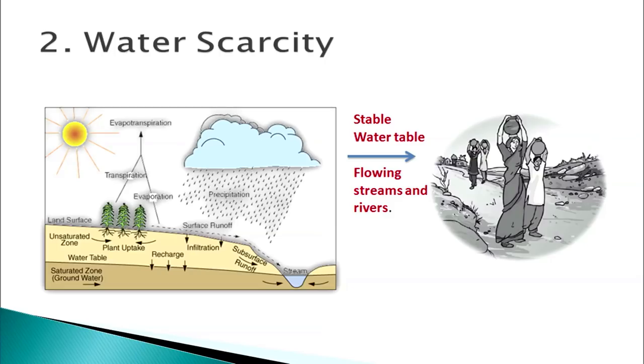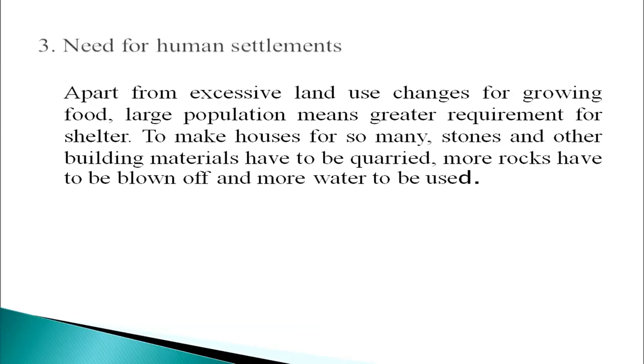Next is water scarcity. Water received as rainfall flows into rivers, lakes and other water bodies. Some of it seeps into the underground and reaches the groundwater. At certain depths of the soil, all the pore spaces between soil particles are saturated with water — this depth is called the water table. The water table may remain stable if the water drawn from the groundwater is replenished by seepage of rainwater. But if water withdrawal exceeds the rate of replenishment, the groundwater table keeps on receding, resulting in drying out of wells. In many areas, excessive withdrawal has depleted groundwater resources causing acute water scarcity. Apart from excessive land use, large population means greater requirement for shelter — to make houses, stones and other building materials have to be quarried and more rocks have to be blasted.